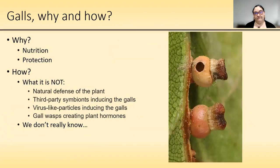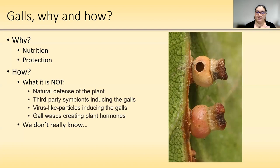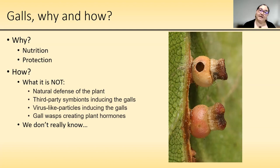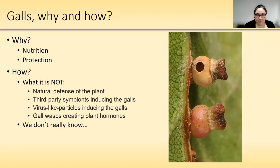One of the first questions people ask is: why do gall wasps do this? There are two main hypotheses. The first is nutrition — they're creating a food source that provides for the larva throughout its entire development, basically a somewhat endless food supply. The second hypothesis is protection — the gall evolved to protect the wasp larva while it develops. To be frank, it's probably a combination of both, though being enclosed in a gall does also make them somewhat susceptible because they can't move.